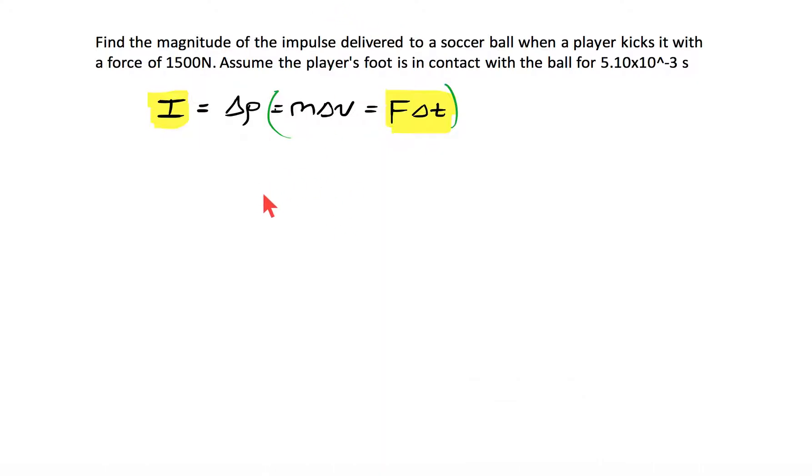We have a force of 1500 newtons acting over a total time of 5.1 times 10 to the negative 3 seconds. So 1500 times 5.1 e negative 3 equals 7.65. The units for this must be the same as they are for momentum, which from a unit standpoint is the same as mv, so kilogram meters per second.